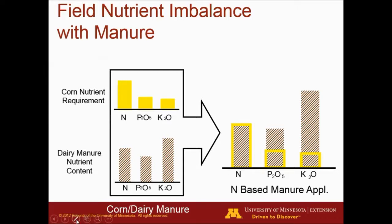In this chart we're trying to show the core nutrient requirements in terms of nitrogen, phosphorus, and potassium. We require a lot of nitrogen, some phosphorus, and some potash. Here's an example of a dairy manure nutrient content. Potassium is usually not a major concern because it doesn't cause environmental issues, but nitrogen and phosphorus can be a concern.